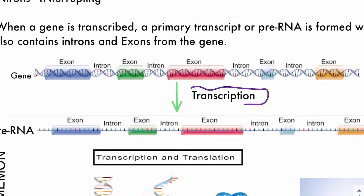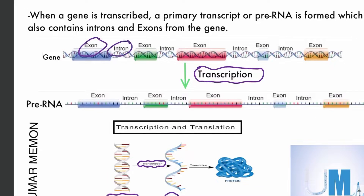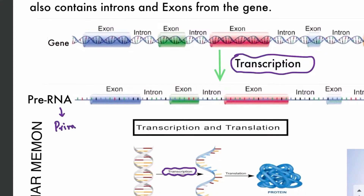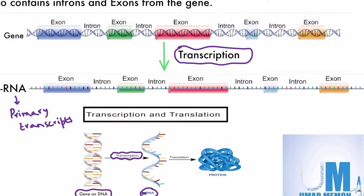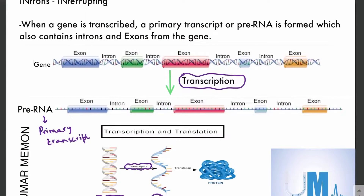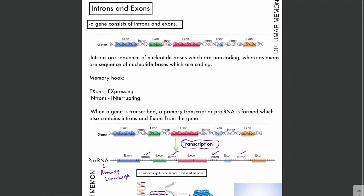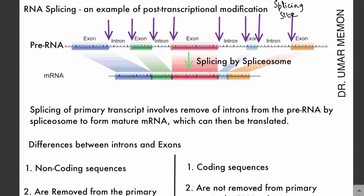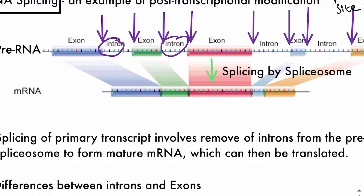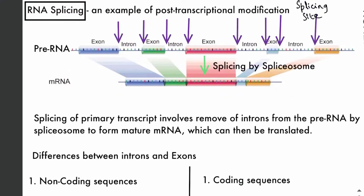When the gene is transcribed, both the exons and the introns are copied, and the RNA that is formed is called the pre-RNA or the primary transcript — not messenger RNA — because it still needs modification before it can be translated. Pre-RNA cannot be translated because it contains introns, which are non-coding sequences. These introns must be removed by RNA splicing to form the final mature messenger RNA.